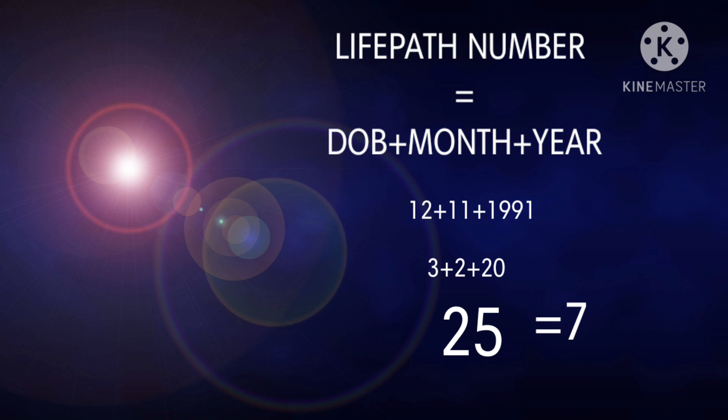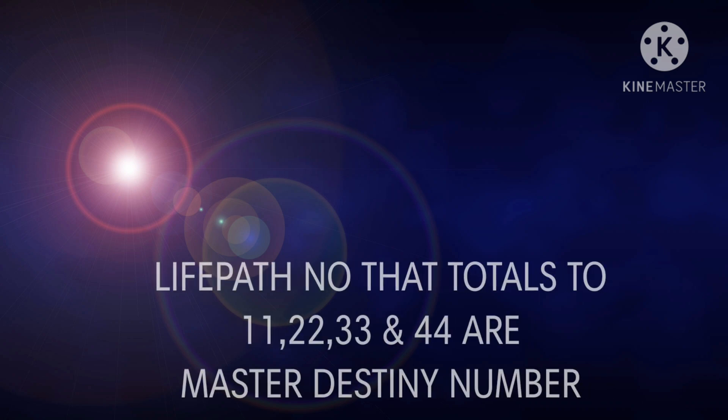The life path number also helps predict future events and the purpose of one's life or existence. To calculate this number, we add up the date, month, and year of the date of birth. For somebody born on 12th November 1991, we bring it to a single digit — 25 is the intermediate total, and then further reduced to 7, so 7 is the life path number of that person. However, there is an exception to this rule.